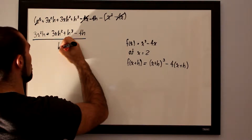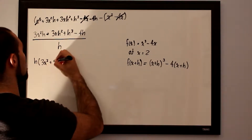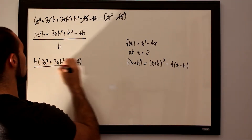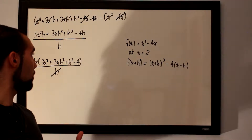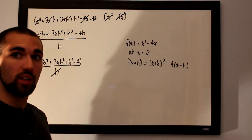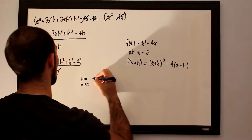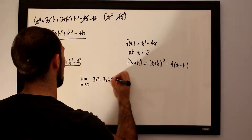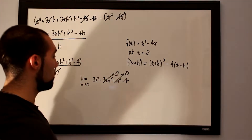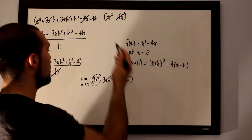All of this is divided by h as per the formula. Factor an h out of the numerator, leaving 3x squared plus 3xh plus h squared minus 4. Cancel the h in numerator and denominator. We're left with 3x squared plus 3xh plus h squared minus 4. Taking the limit as h approaches zero, the terms multiplied by h go to zero, leaving us with 3x squared minus 4 as the derivative.